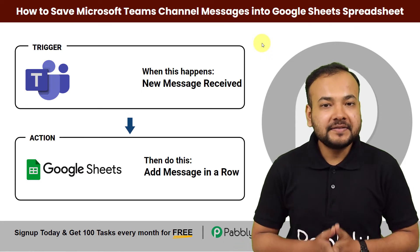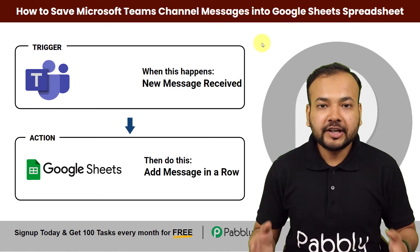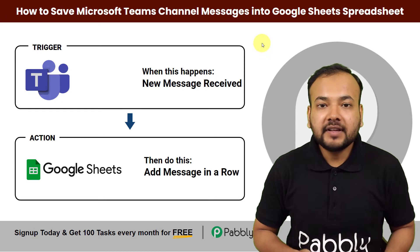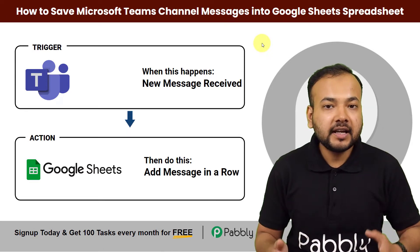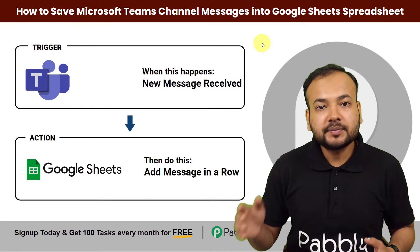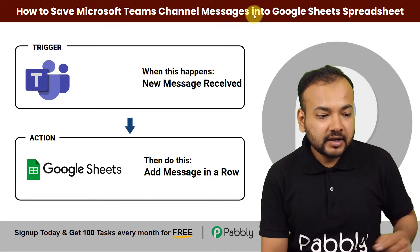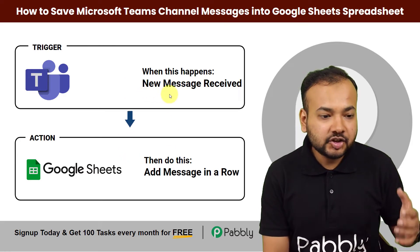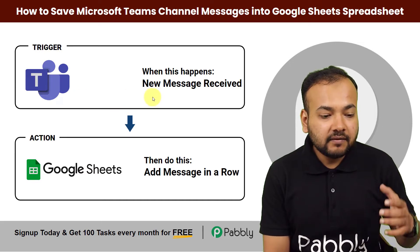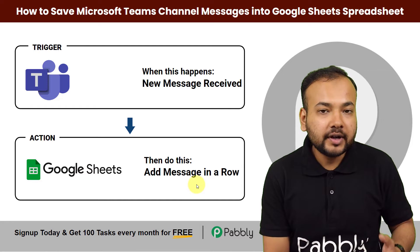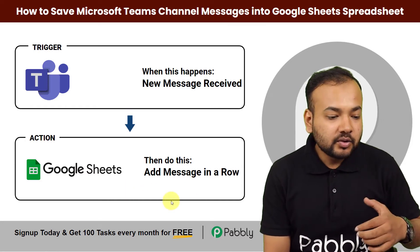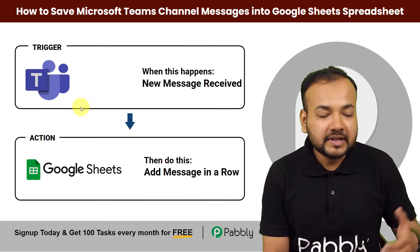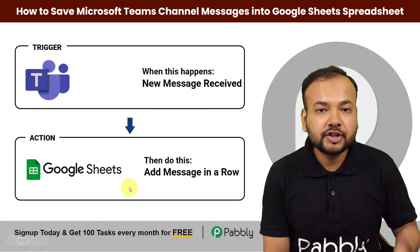Hey everyone, welcome back. In this video you will learn a new automation technique by which you can connect Microsoft Teams with Google Sheets to save the conversations and chats that you are having in a channel in Microsoft Teams into a spreadsheet. As and when you receive any message in a channel in Microsoft Teams, the same message will be automatically added in a new row in Google Sheets. By this automation you can create a record of the chats and refer to that record later on.